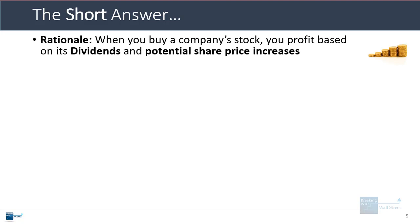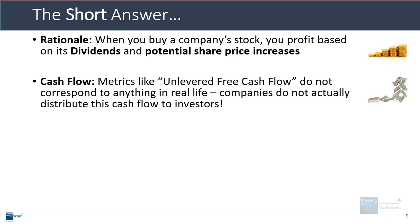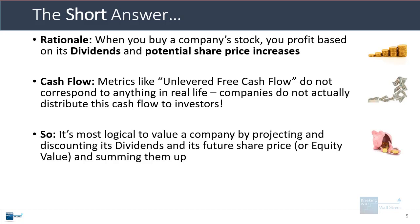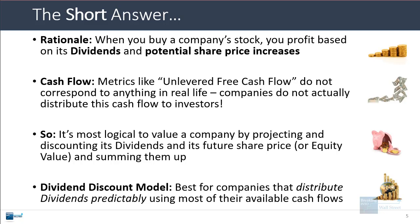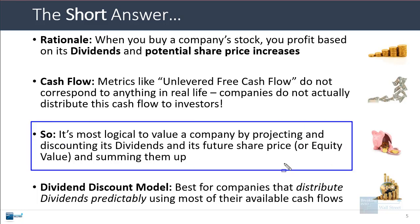The short answer about the dividend discount model is as follows. When you buy a company's stock, you profit based on the company's dividends and potential share price increases. Metrics like unlevered free cash flow don't actually correspond to anything in real life — no company distributes or retains its unlevered free cash flow. Therefore, it's most logical to value a company by projecting and discounting its dividends and its future share price, discounting that equity value back to present value, and summing those up to see what the company might be worth today.